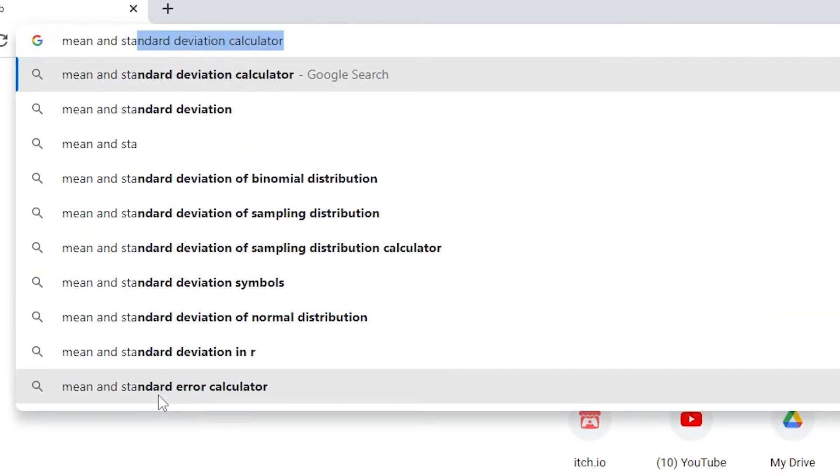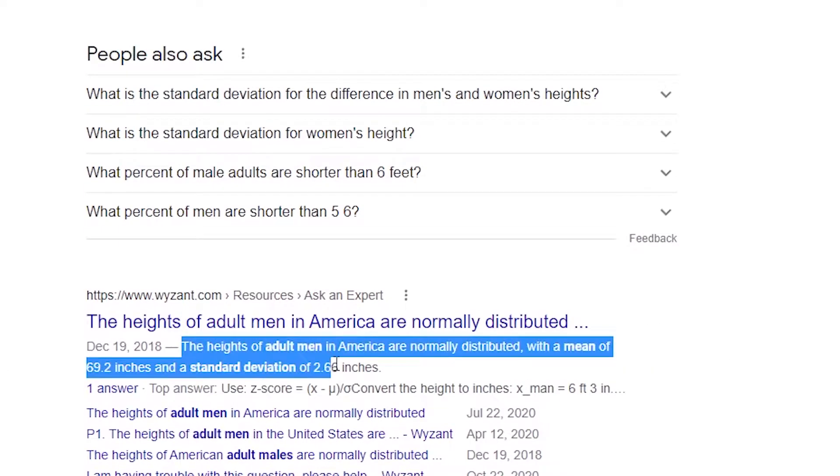But sometimes, you can actually find mean and standard deviations on the internet. For instance, if I'm using this technique for adult male heights, I can literally just search up in Google, mean and standard deviation of adult male heights, and get exactly what I'm looking for.